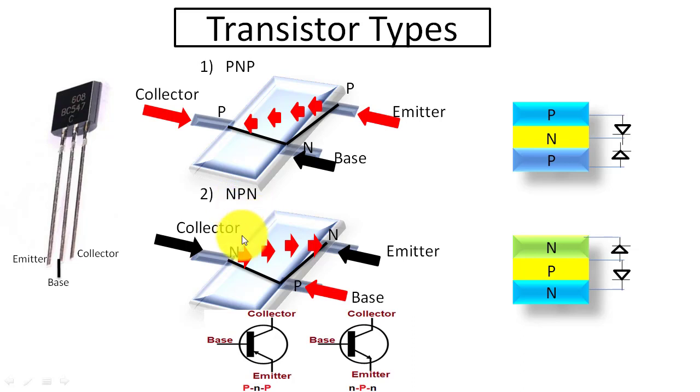Here you can see PNP transistor internal structure. Its collector and emitter pins are P type both of them, and base is N type. You can see also its diode position.